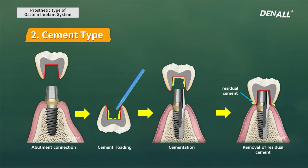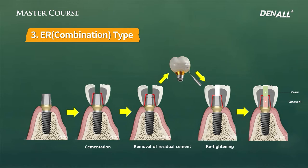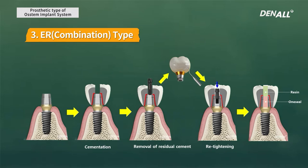As with natural teeth, excess cement needs to be removed. For ER type, this is a combination of screw type and cementation type. The abutment is connected and the prosthesis is bonded using cement. The screw hole is used to remove the screw, cement is removed extra-orally, and as with screw type, the implant is tightened and the screw hole is filled up.